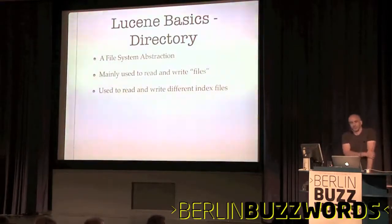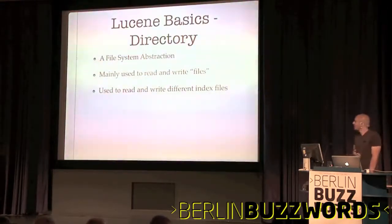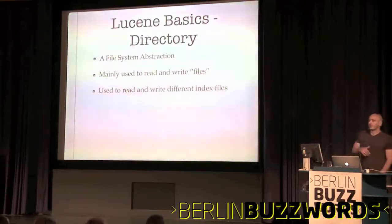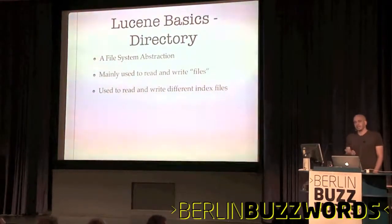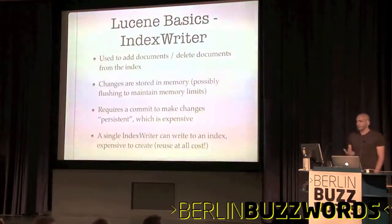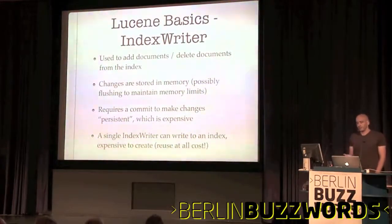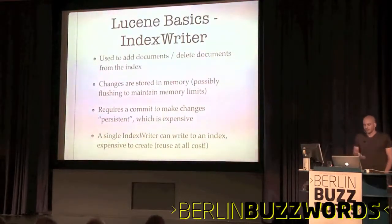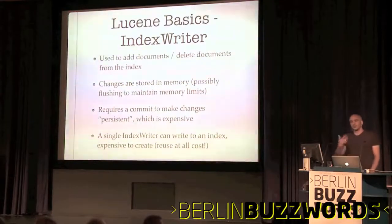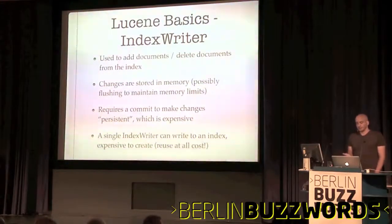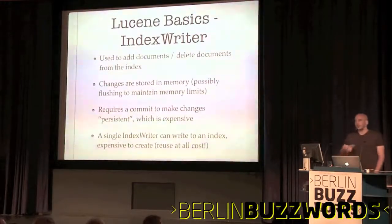Let's start with some basic Lucene concepts which we'll need to understand how we can work with Lucene to make it distributed. The first concept is something called a directory. Lucene has this nice abstraction called directory, which is basically a file system abstraction. It allows you to read and write files, and it's used by different constructs in Lucene to read and write index files.